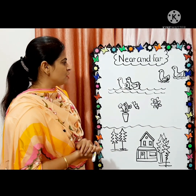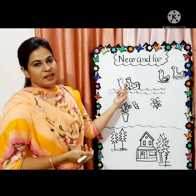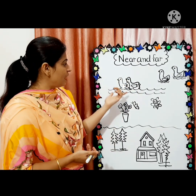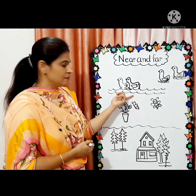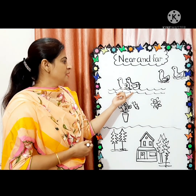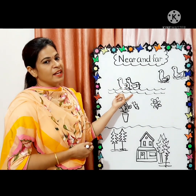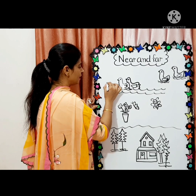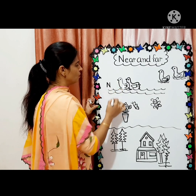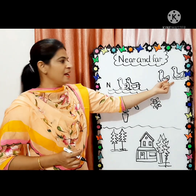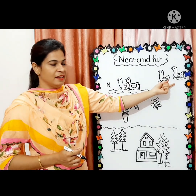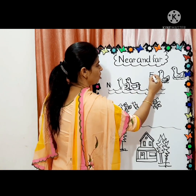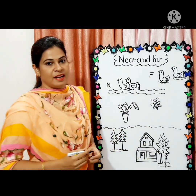Look at the first picture. There is a pond and there are ducks. The pond is near — which duck is near? Two ducks are near, and the other ducks are far — many miles away. The pond is far for those ducks. The other two ducks are far.